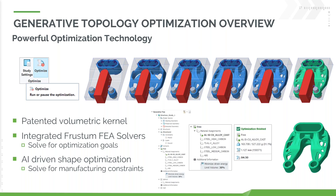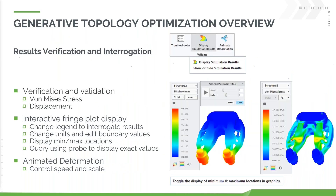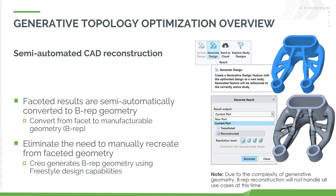Once we've run that and come up with our final result, we've got a number of different things we can do. We can run results verification and interrogate that — we can look at our stresses, displacement, and actually safety factor now in Creo 9. We can review those results, view animations, see what's going on, make sure we're happy with that. Then, if everything's great, this is another one of Creo's party tricks — we can generate that design, and this is another great benefit of being integrated into Creo.